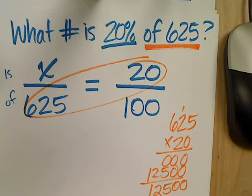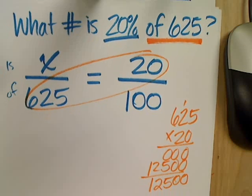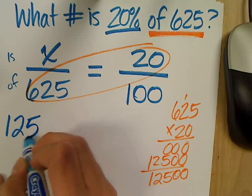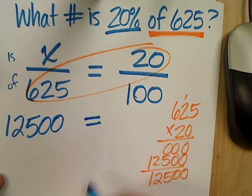12,500. Is that what you got? Anybody get something different? Because I could have made a mistake. Okay. So, now that I've multiplied that, my answer goes here. Bring my equal sign down. You did do something wrong. I did do something wrong? Okay.